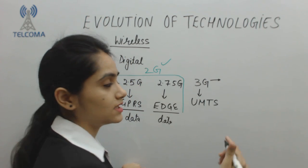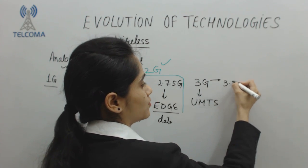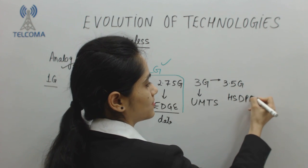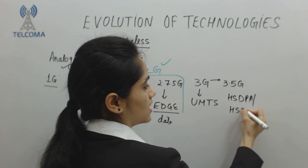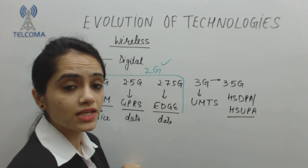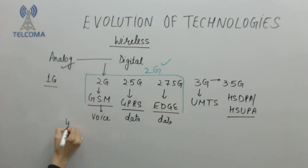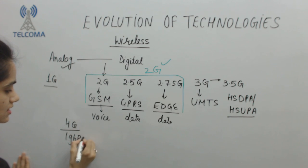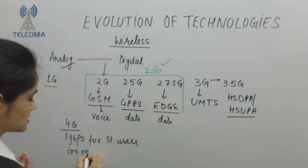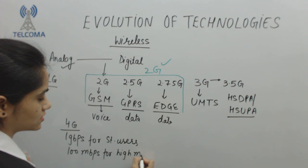Next we keep on increasing the data. We have 3.5G which is HSDPA, High Speed Downlink Packet Access, and HSUPA, High Speed Uplink Packet Access, because we require the 4th generation. And 4th generation should support 1 Gbps for stationary users and 100 Mbps for high mobility users.